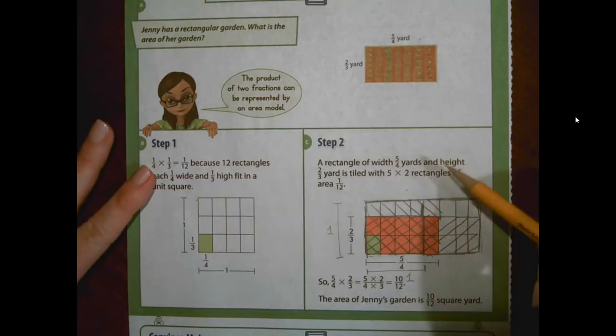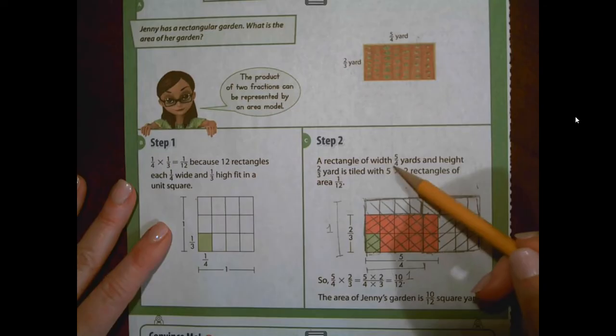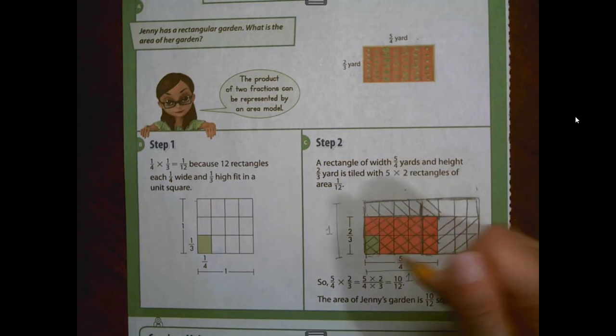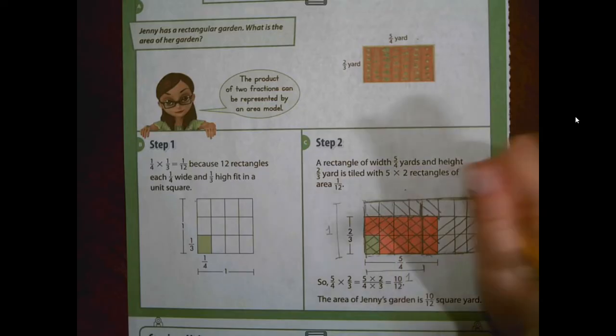Now, step two. We have a rectangle with five-fourths yards. So what we actually need to do is we need to draw two wholes because one of these side lengths, the five-fourths, is going to go into another whole that would also be broken into twelfths. Our denominator is going to be twelfths because there are 12 units in a whole.